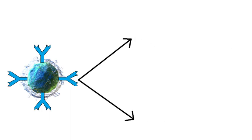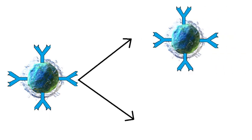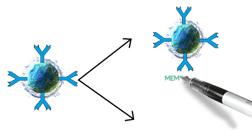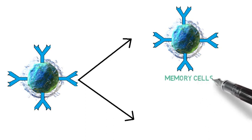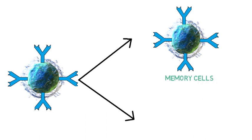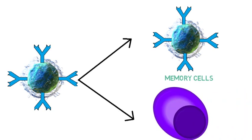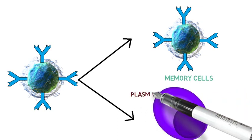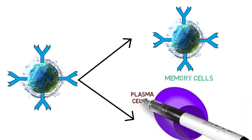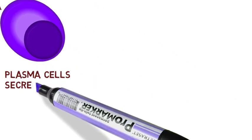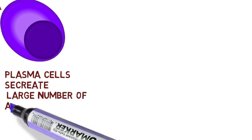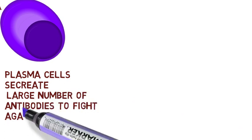These cytokines activate those types of B-cells which can produce antibodies specific to the antigen. Once a B-cell is activated, it divides into two types of cells: memory cells, which are used in future attacks of the same pathogen, and plasma cells. These plasma cells secrete a large number of antibodies to fight against infection.